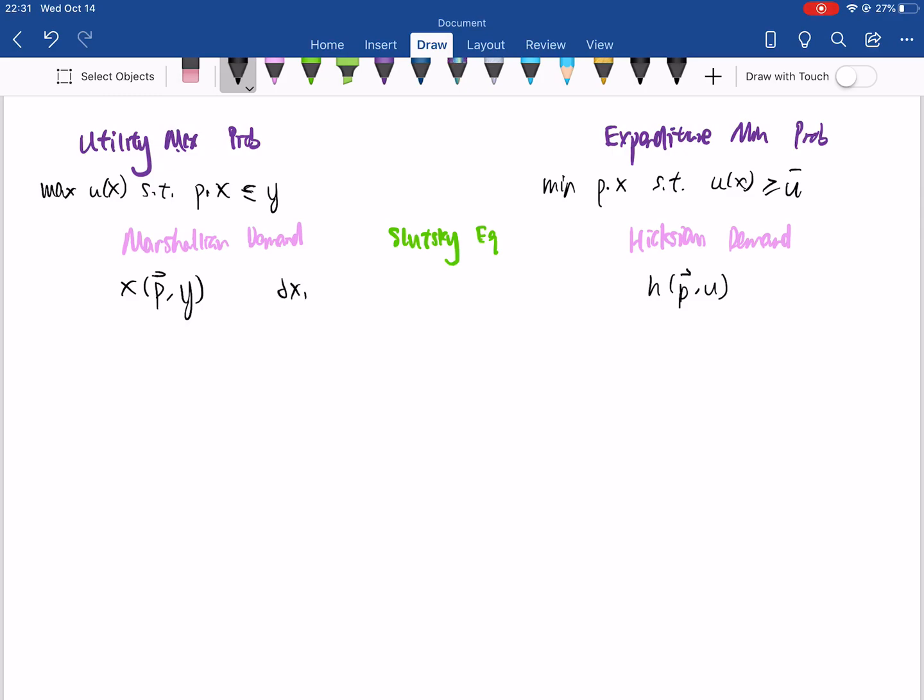basically the change in the Marshallian with respect to change in prices into a substitution effect and an income effect. So this says that, suppressing the parameters for brevity, we'll say del Xi del Pi, or del Pj, whatever you want to call it, is equal to del Hi del Pi minus del Xi del Y times Xi.